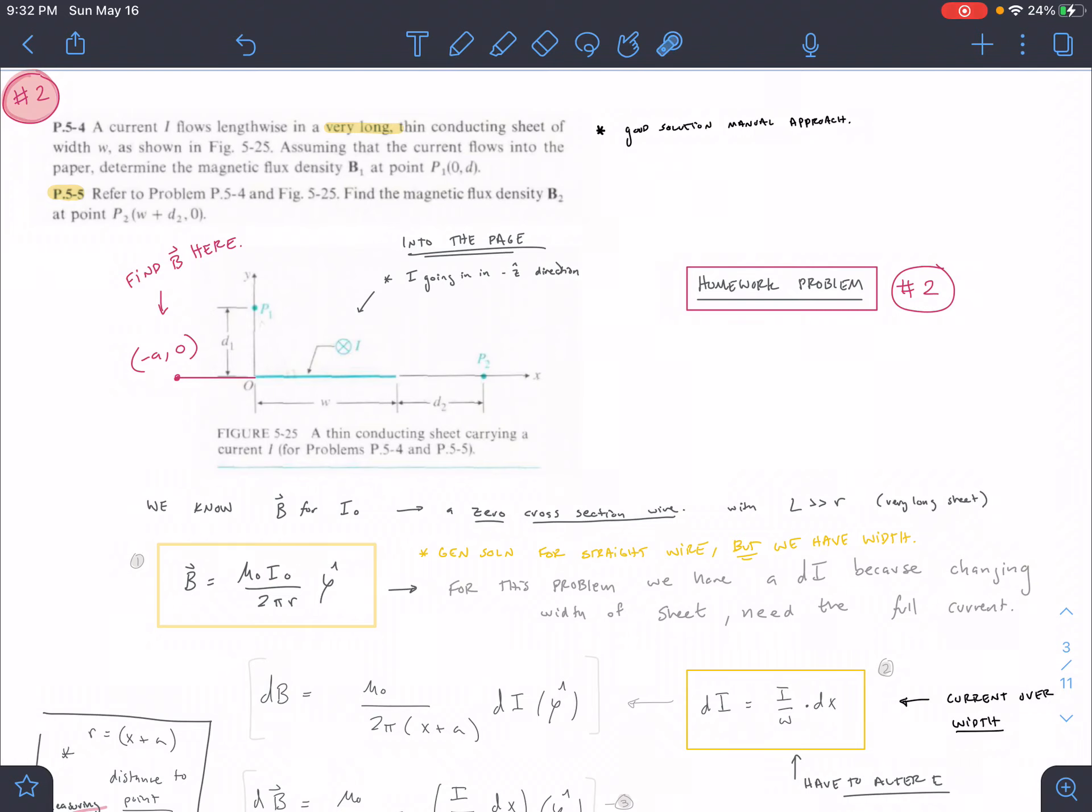In this problem we have a sheet of current that's very long, extending back into the page, and we have a current that's flowing through that sheet in the negative z direction. So if this is x and this is y, the current is going back in the negative z direction.